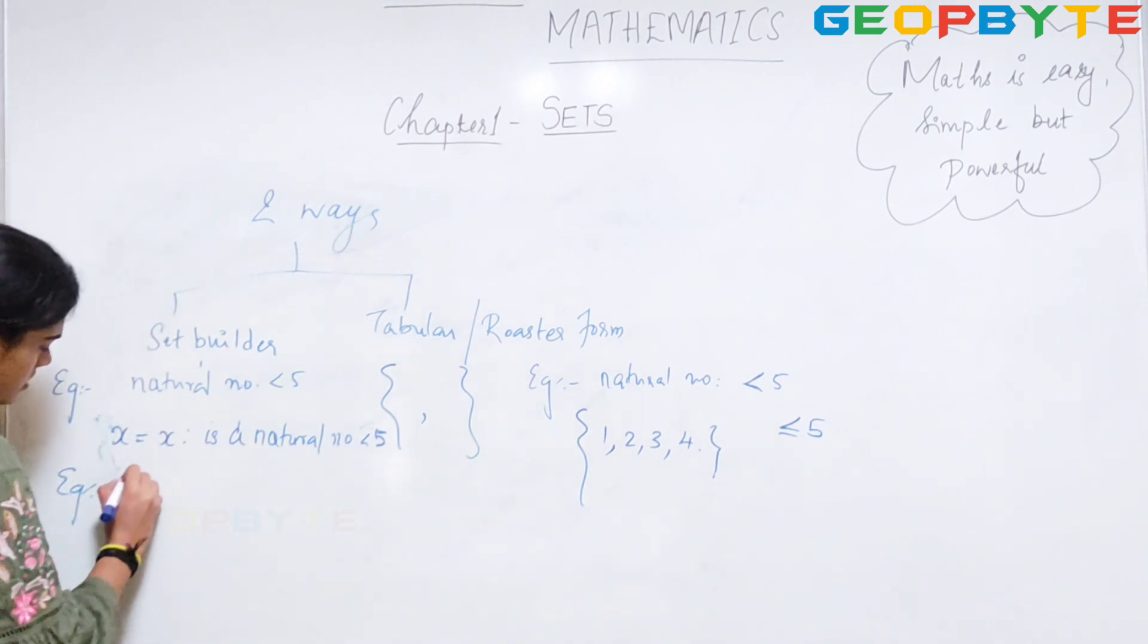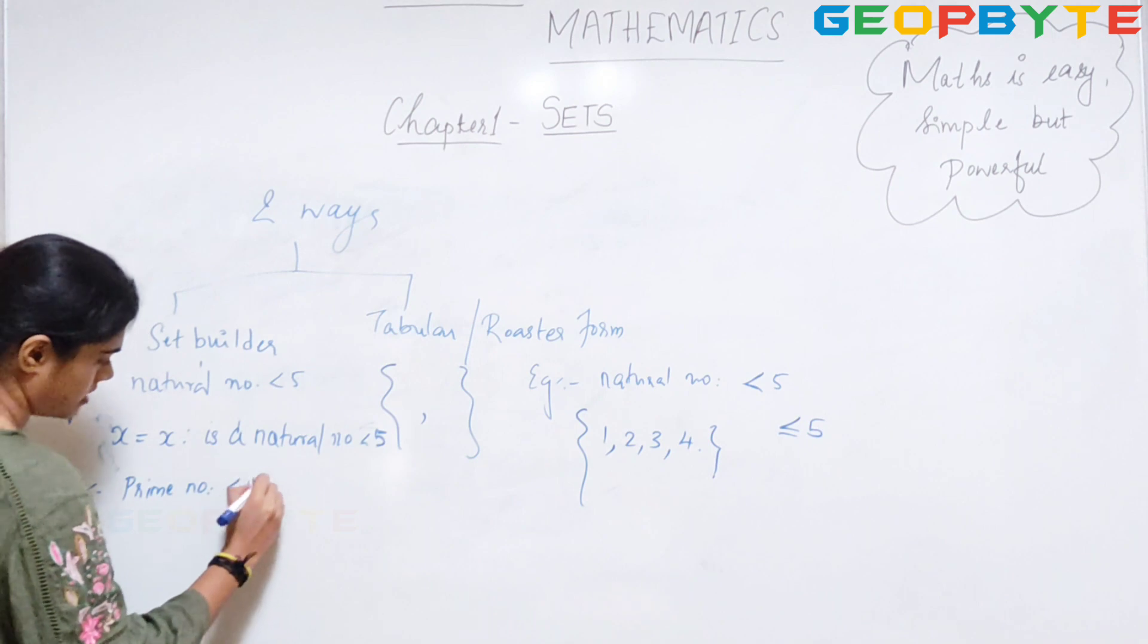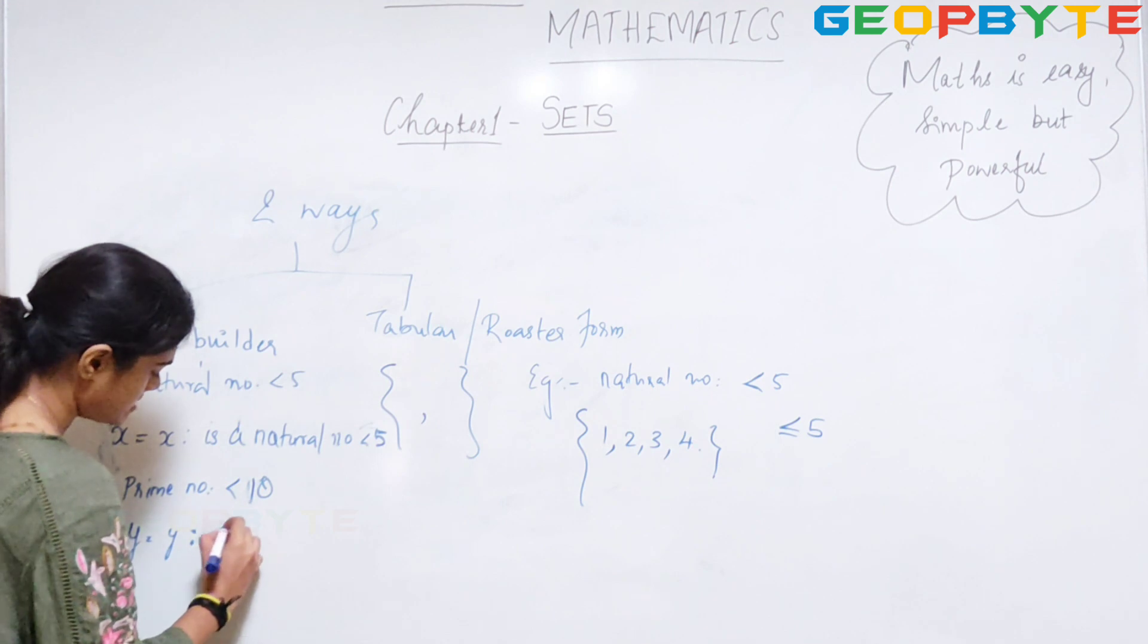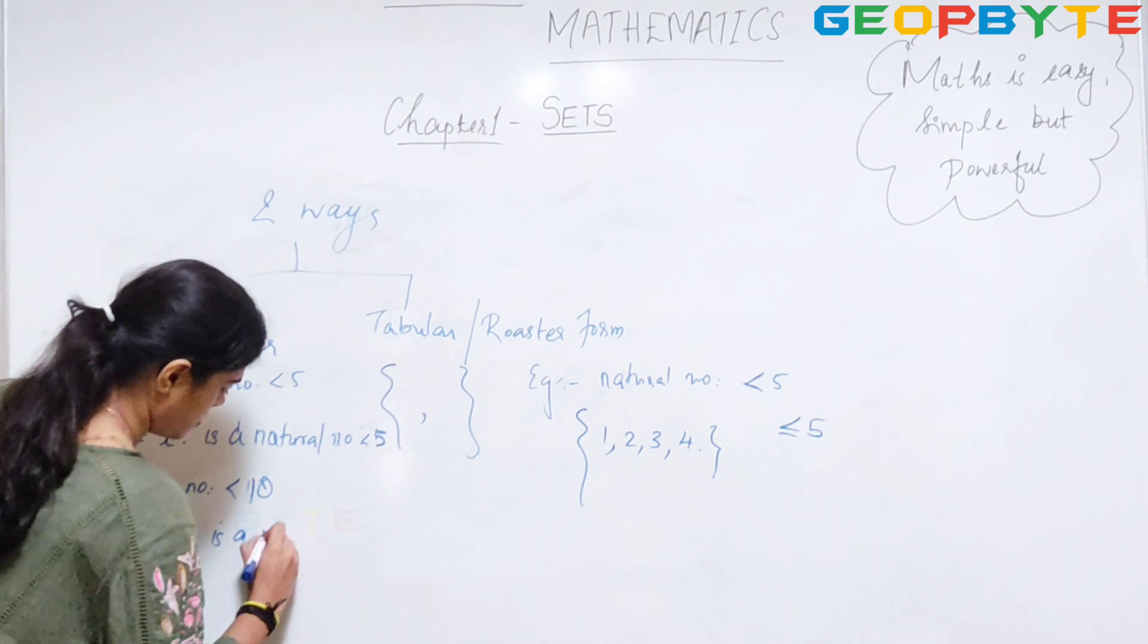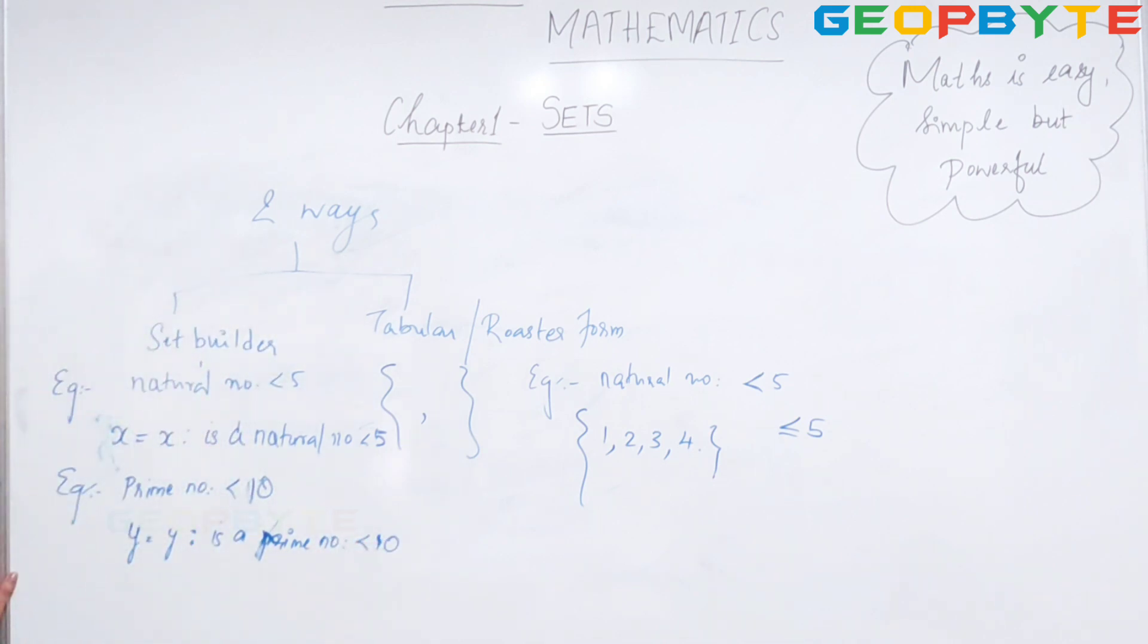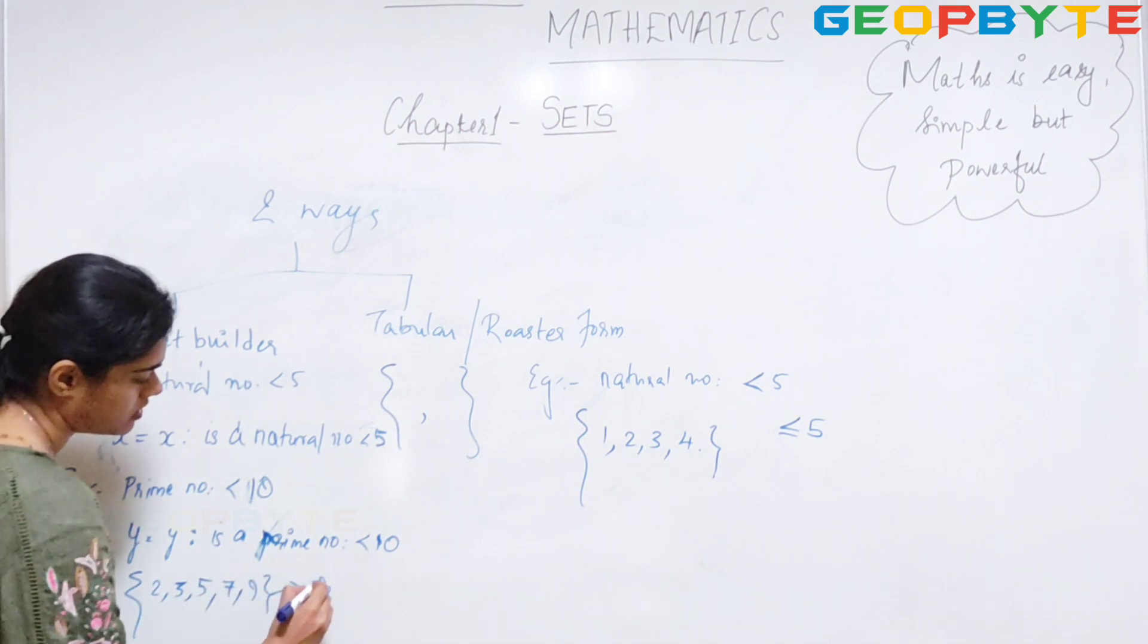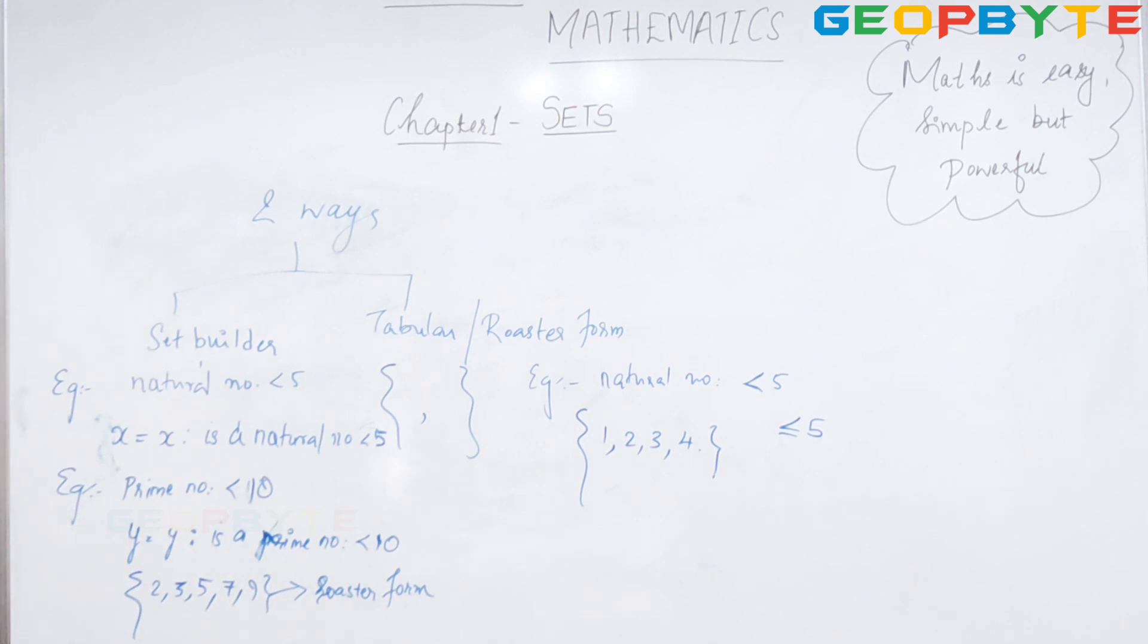Another example would be prime numbers less than 10. Then how will I represent it? Let y be my variable. The semicolon is such that y is a prime number less than 10. What are the elements? 2, 3, 5, 7, and 9. This is my roster form.